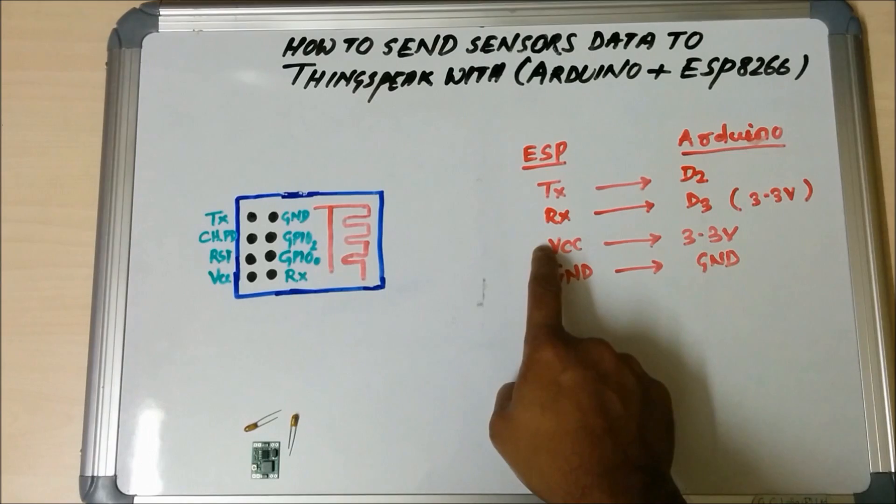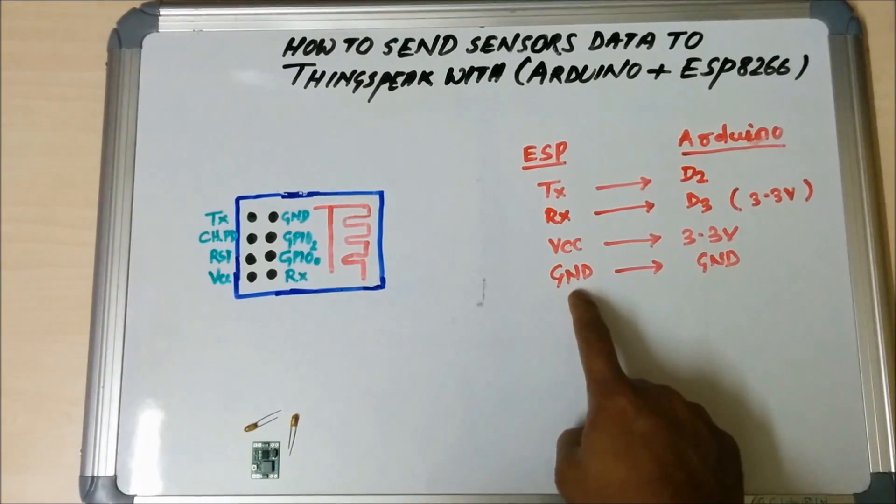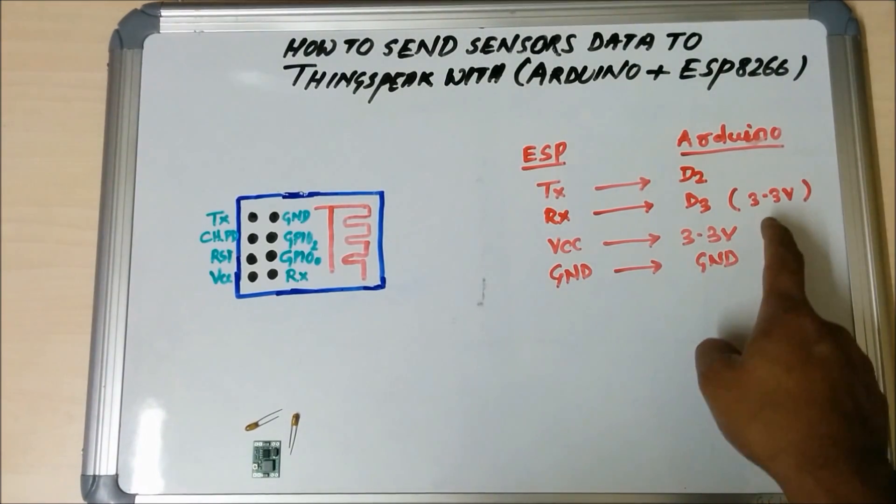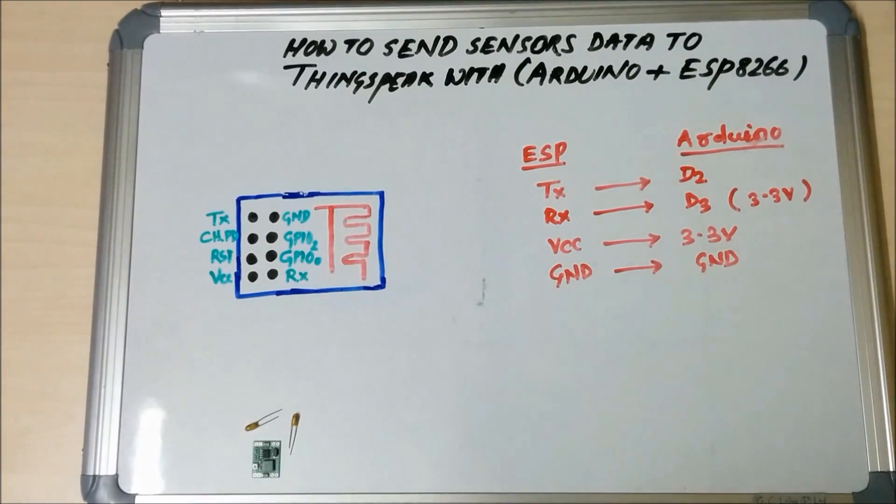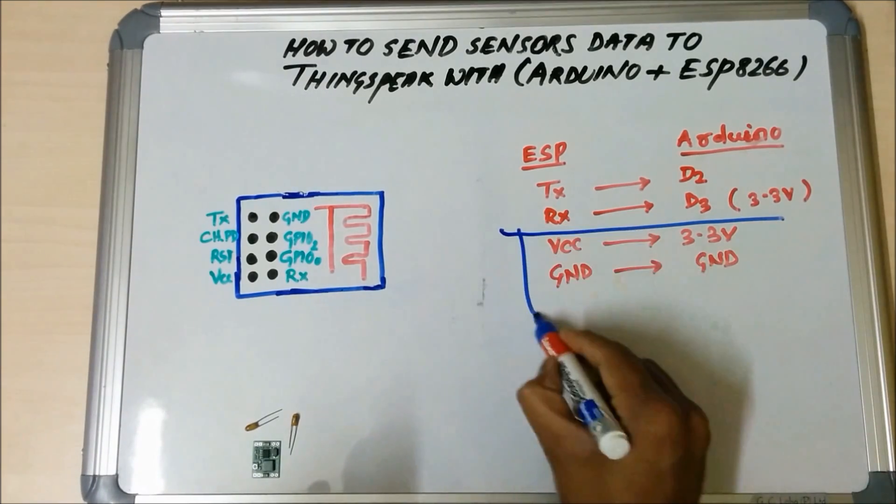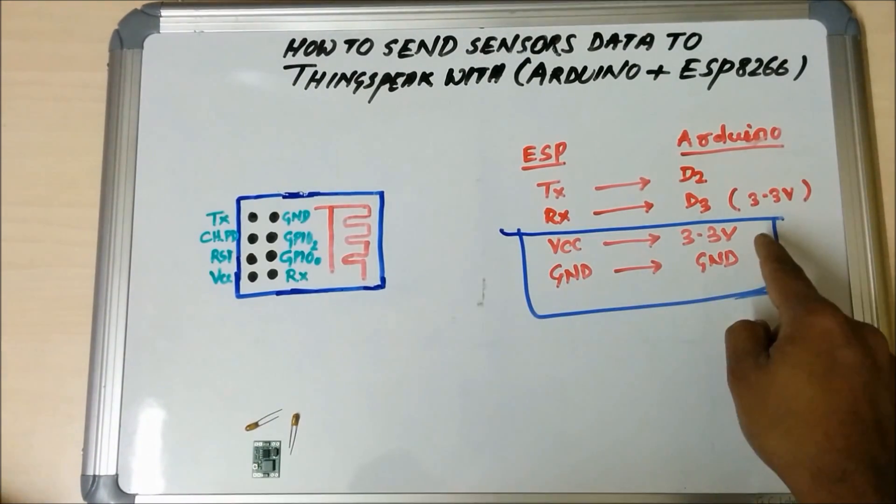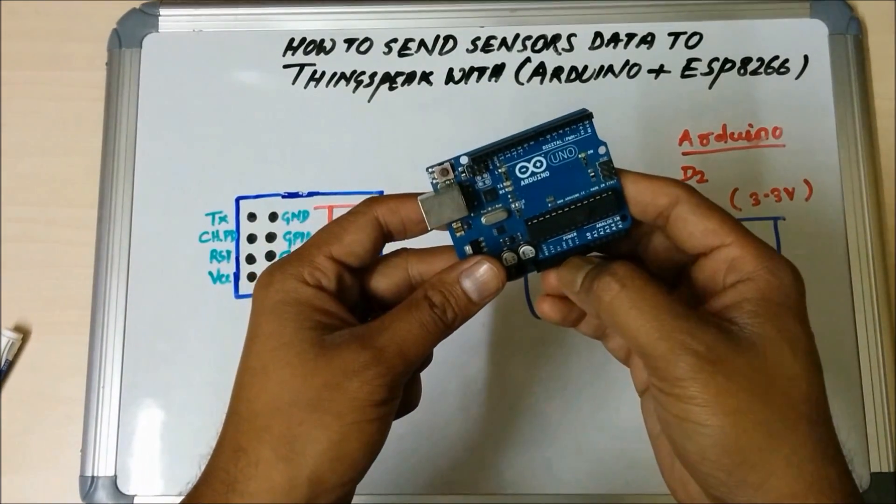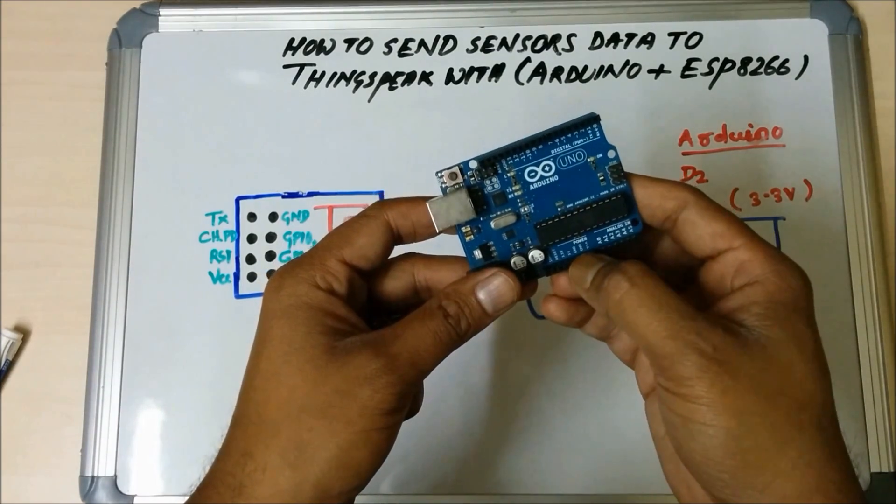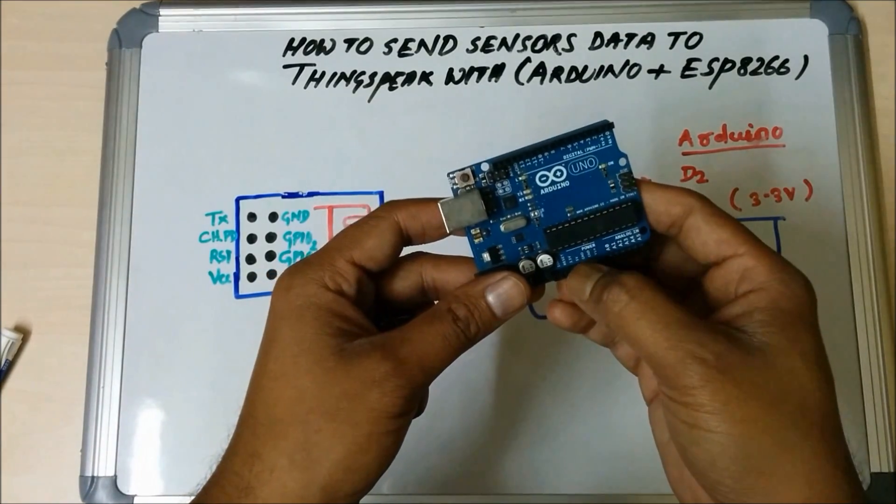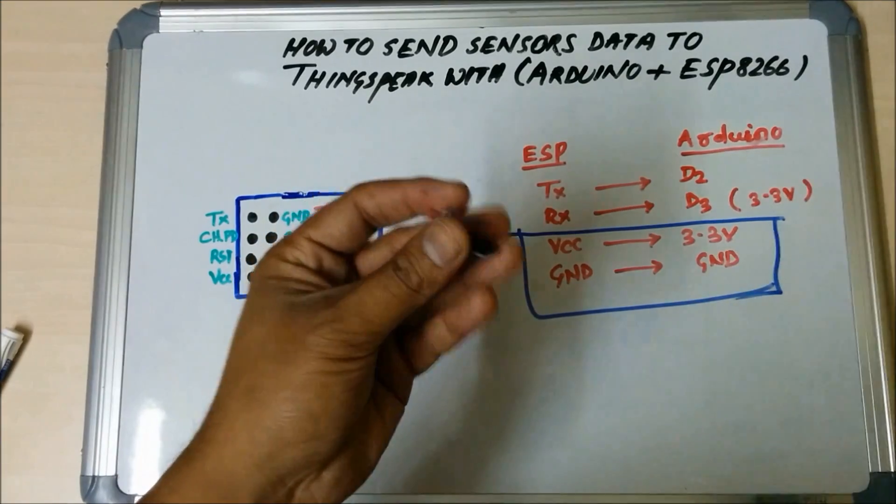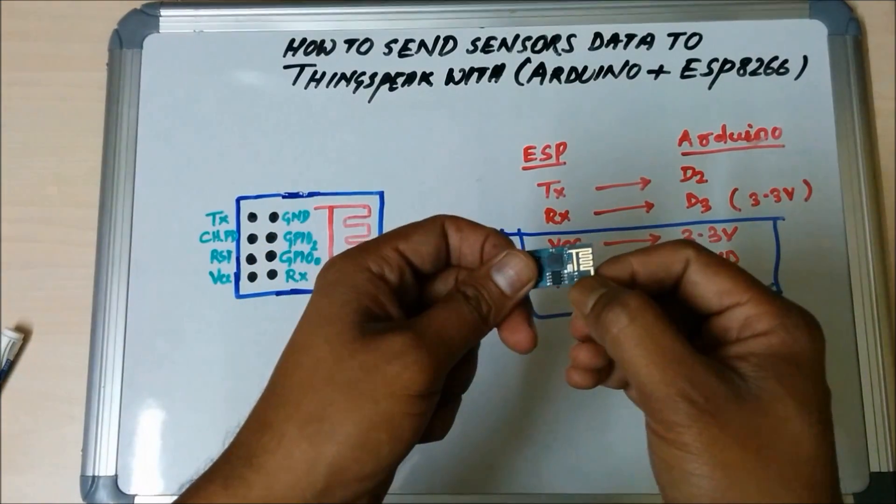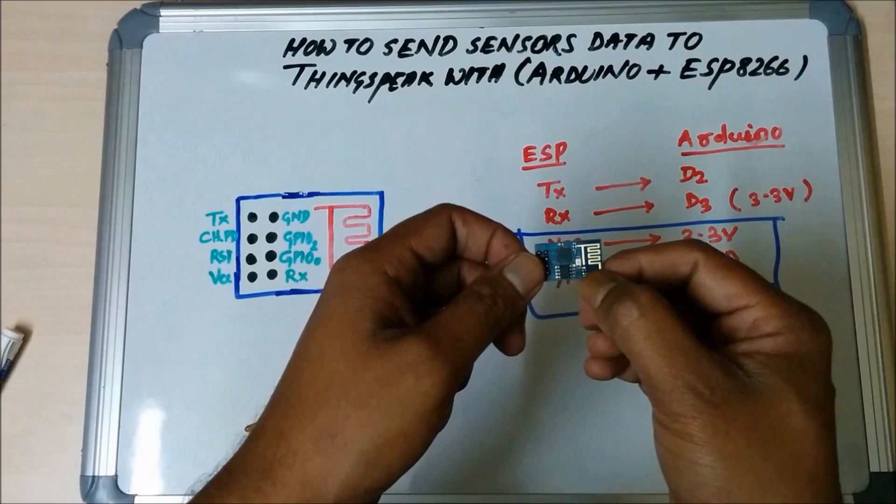Then VCC is connected to 3.3V and ground to ground, but remember this 3.3V is not from the Arduino board. Why? Though you have a 3.3V pin in Arduino board, it cannot produce sufficient current necessary for this Wi-Fi module. So you need a separate power source.